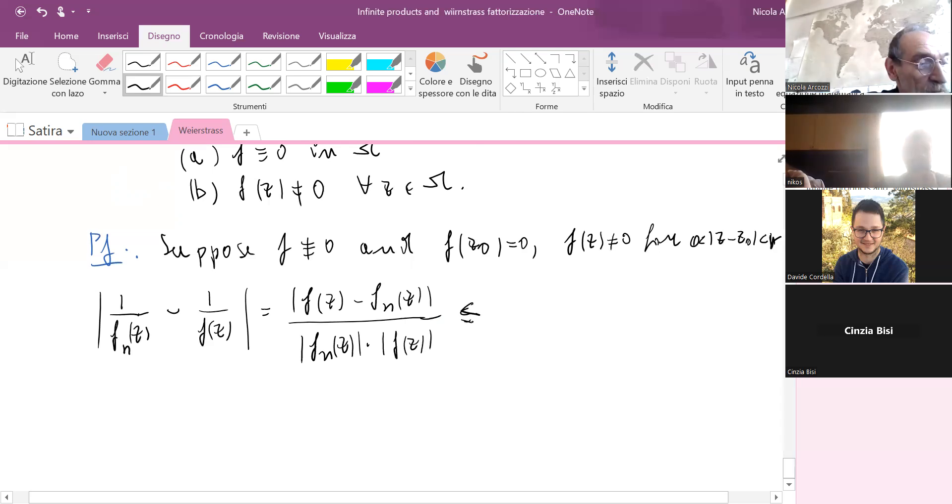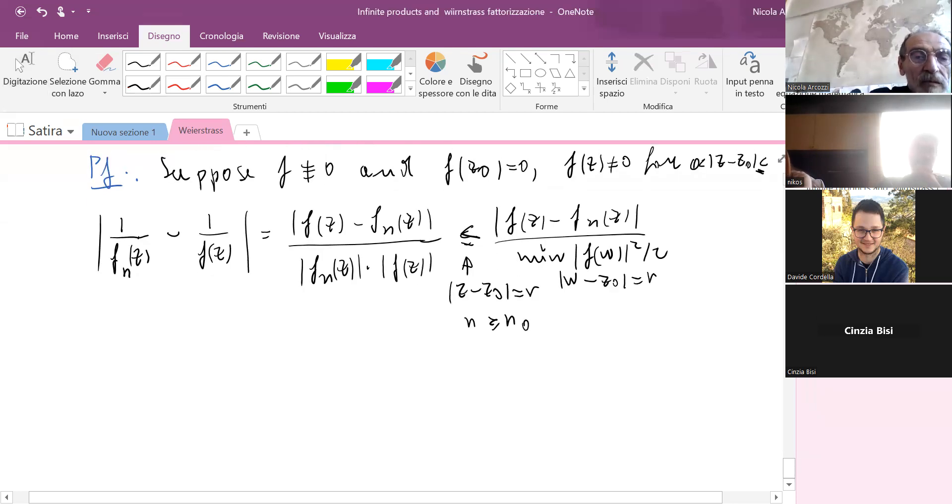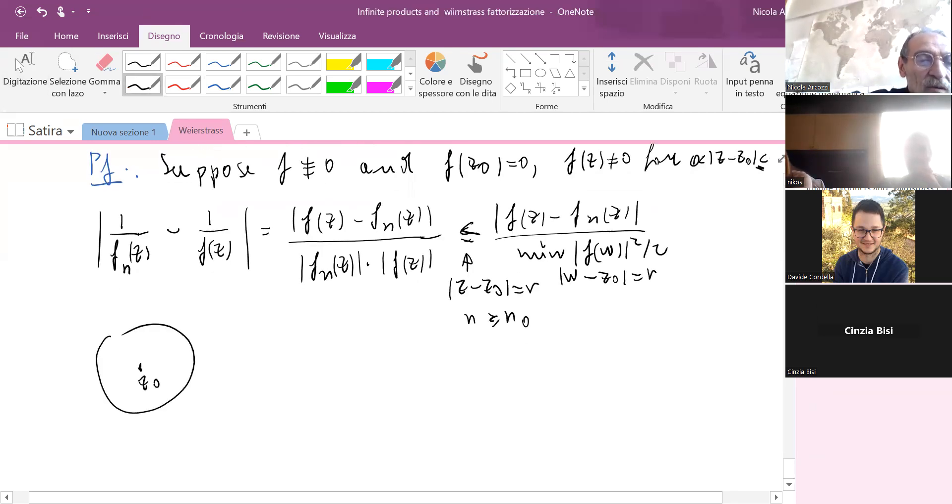If I consider |z - z₀| = r, let me put here less or equal than r, and n greater or equal than some constant N, that's less or equal than |fn(z) - f(z)| divided by the minimum of |f(z)| on |z - z₀| = r. So I'm doing the estimate here.